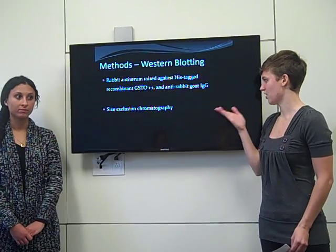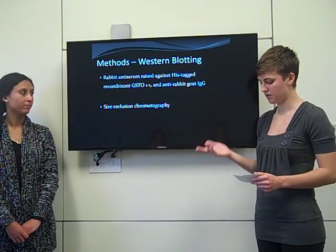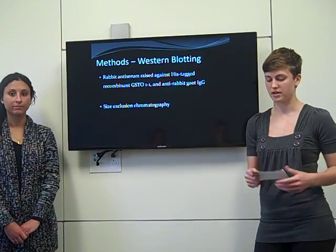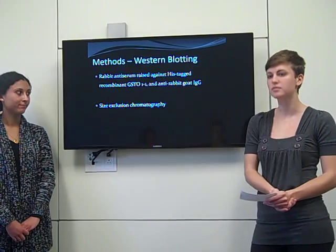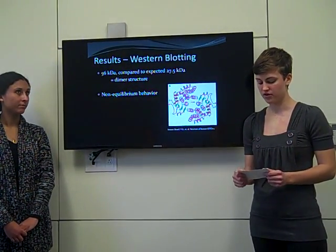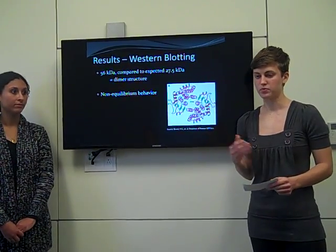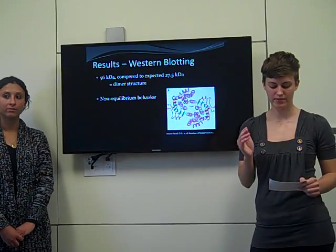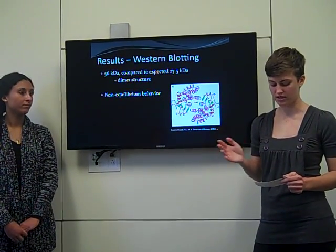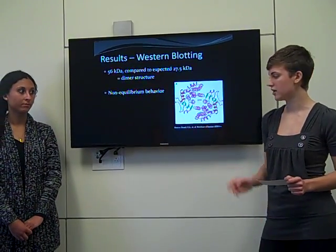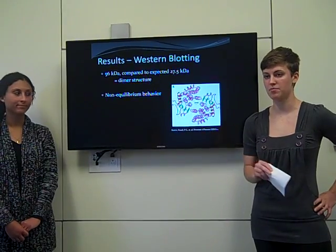The mixture was then mixed with anti-rabbit goat IgG as the secondary antibody. The purified GSTO-1 also underwent size exclusion chromatography, done on a fast protein liquid chromatography system using a column with phosphate-buffered saline solution. The size exclusion chromatography revealed that the size of GSTO-1 was roughly 56 kilodaltons — just over twice the expected size for a single molecule — revealing that the enzyme naturally forms a dimer, with 90% of the sample forming the dimer and 10% remaining a monomer.